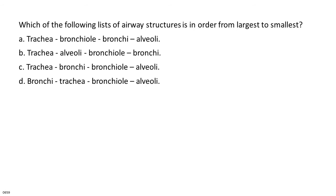Which of the following lists of airway structures is in order from largest to smallest? A. Trachea, bronchiole, bronchi, alveoli. B. Trachea, alveoli, bronchiole, bronchi. C. Trachea, bronchi, bronchiole, alveoli. D. Bronchi, trachea, bronchiole, alveoli.